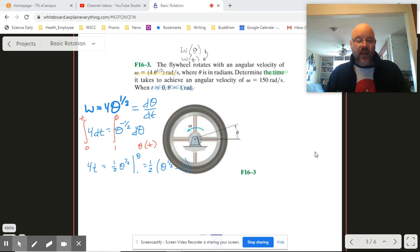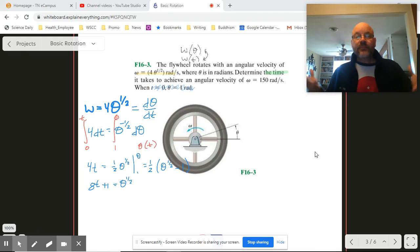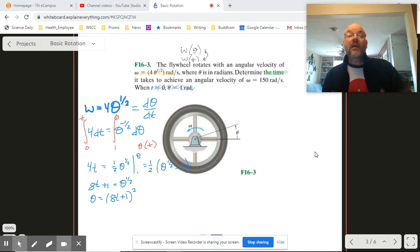All right. So let's do a little bit of algebra with this thing. So I'm going to take my half to the other side, then I'm going to take my 1 to the other side. So then we've got 8t plus 1 is equal to theta to the 1 half, square that, and we get that theta is 8t plus 1 squared. Okay. So now we've got theta as a function of time.